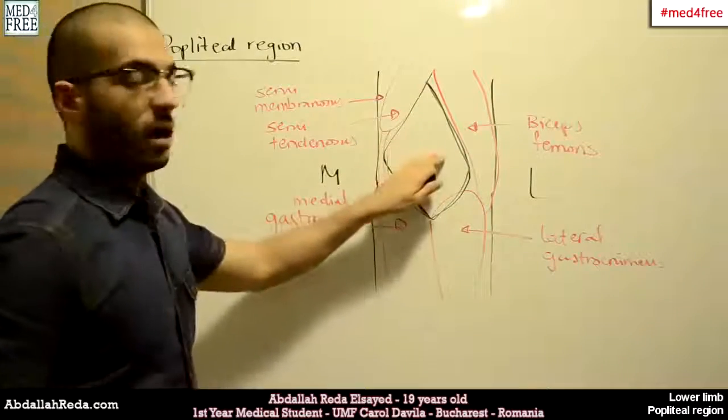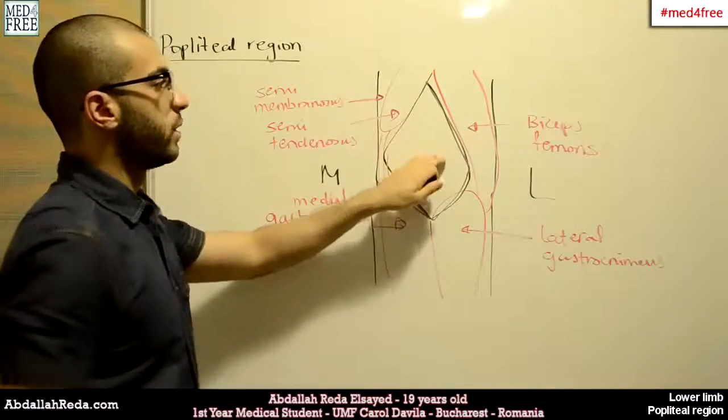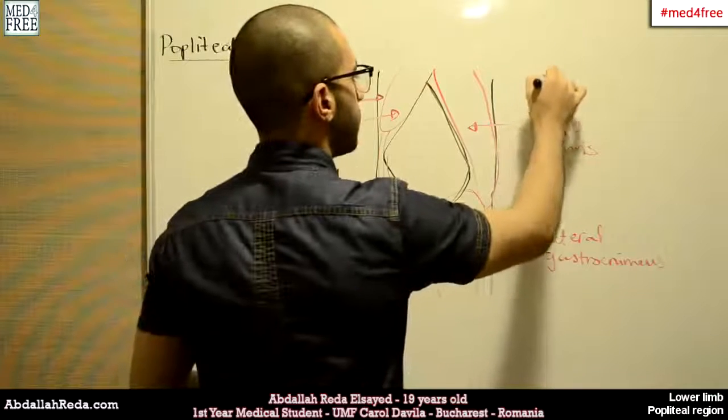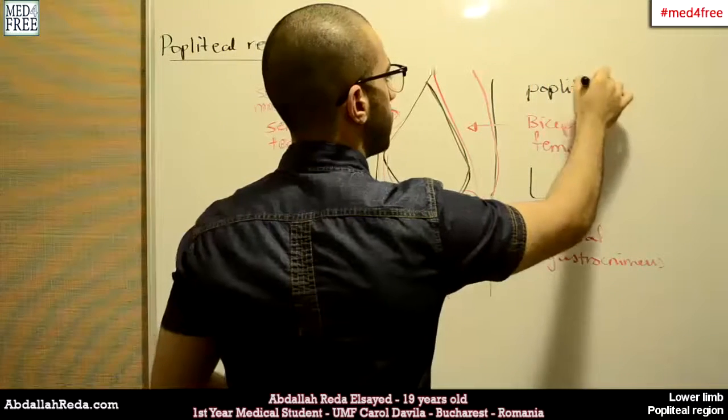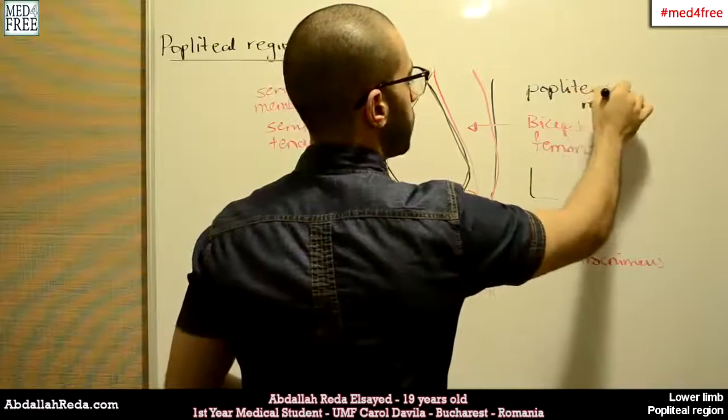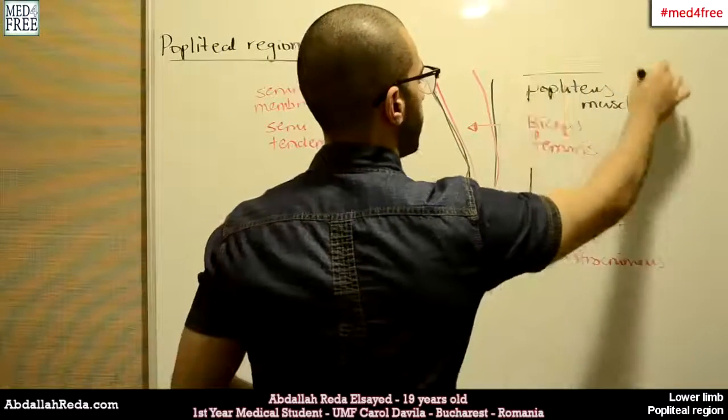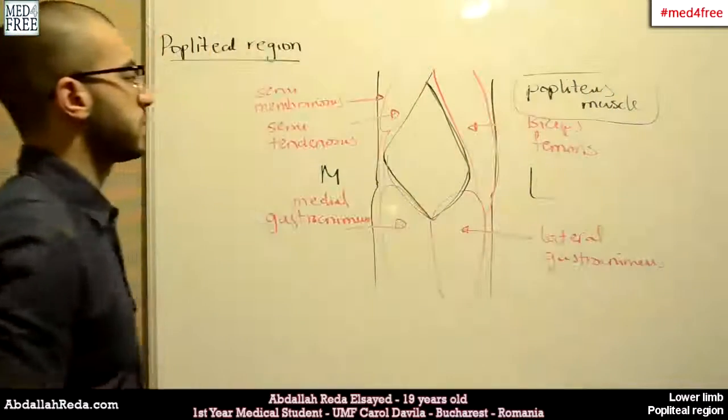So the floor of the popliteal region is formed by the popliteal muscle. This is why it's called the popliteal region. It's formed by the popliteal muscle, the floor.